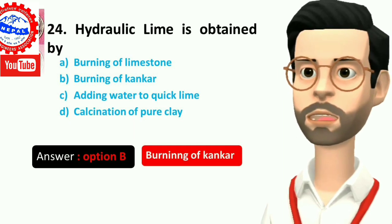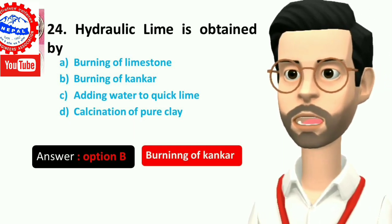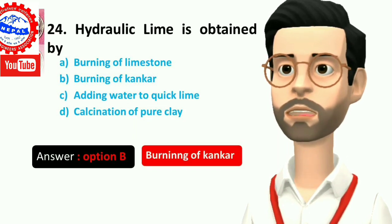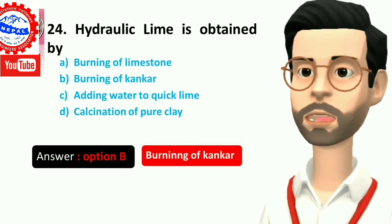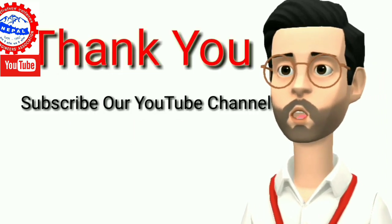Twenty-four, hydraulic limes are obtained by: A) burning of limestone, B) burning of kankar, C) adding water to quick lime, D) calcination of pure clay. Answer is option B, burning of kankar. Thank you and don't forget to subscribe.